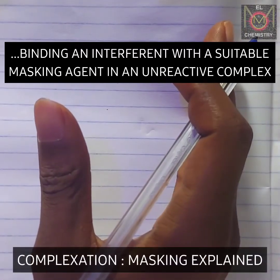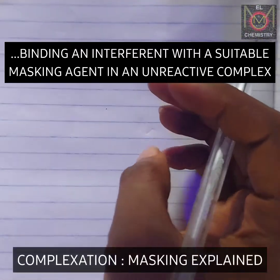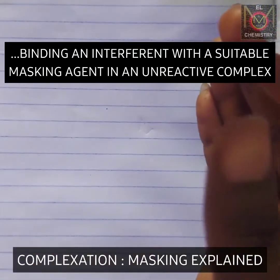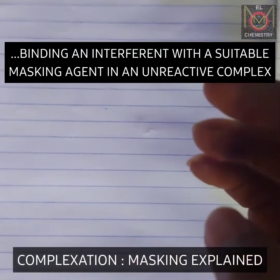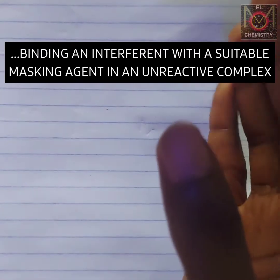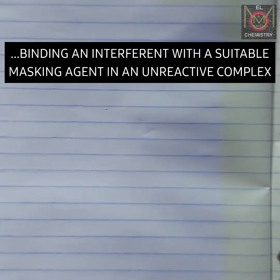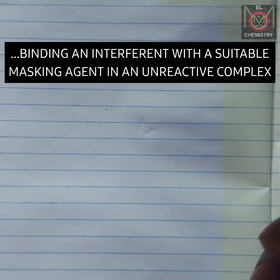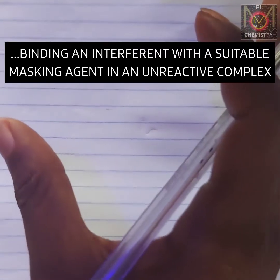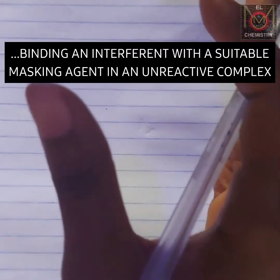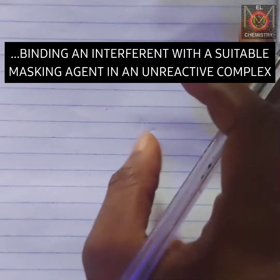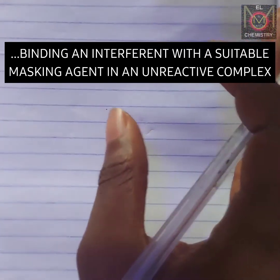Masking itself, which is complexation, is just a process of separating an analyte from an interference. The analyte is the chemical species you want to determine or analyze or get its concentration. The interference is the chemical species you don't want to interfere in your analyte determination.